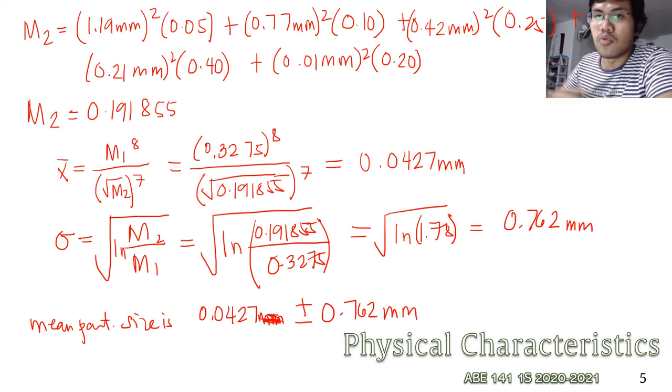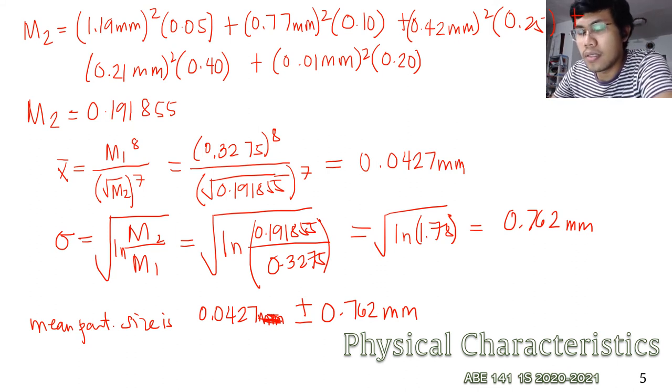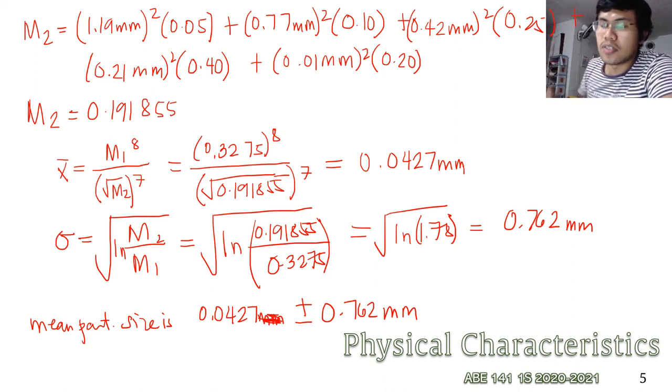What does it mean? So at any one time, if you pick a particle from the bulk, you will be able to get something that measures 0.04 millimeters plus or minus 0.762. So it's within that range.